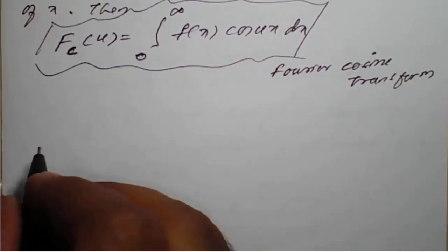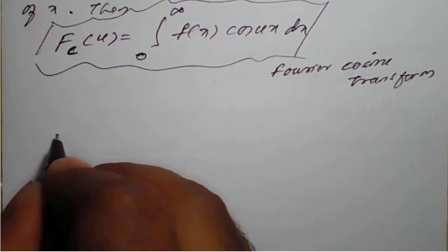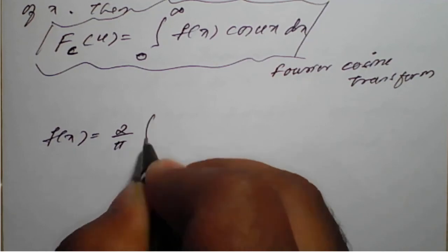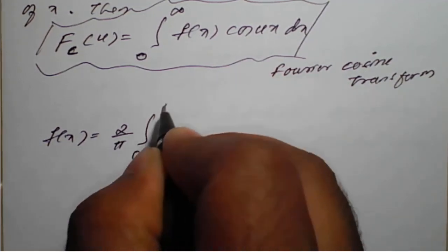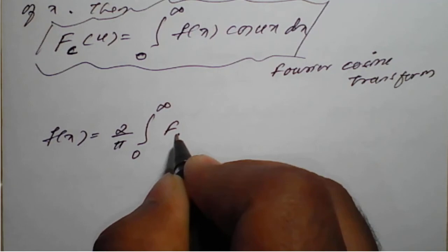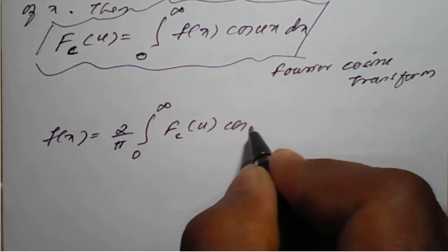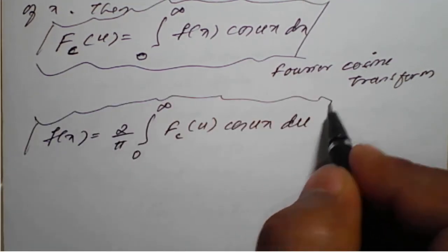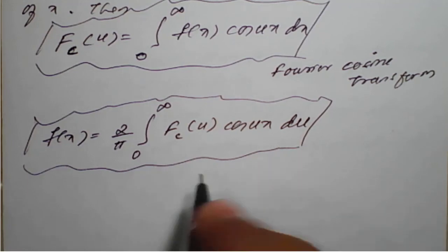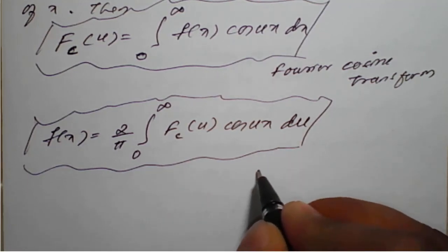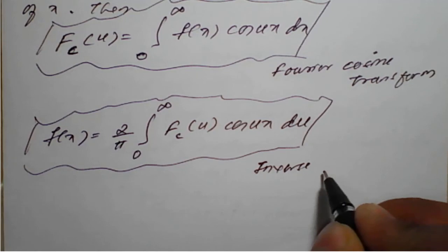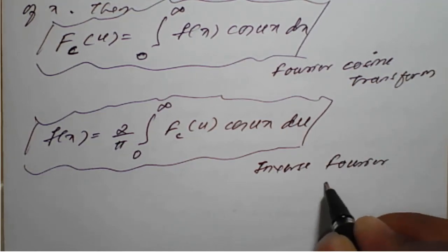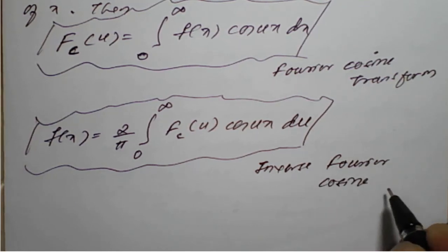Similarly, the inverse Fourier cosine transform is given by f of x equal to 2 upon pi, integration from 0 to infinity, Fc of u into cosine of u x into du. We need to integrate with respect to u because we are reversing — that is the inverse Fourier cosine transform.